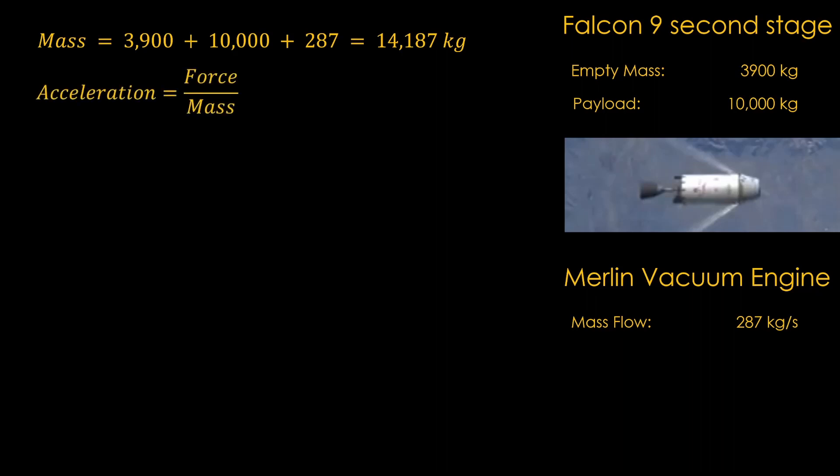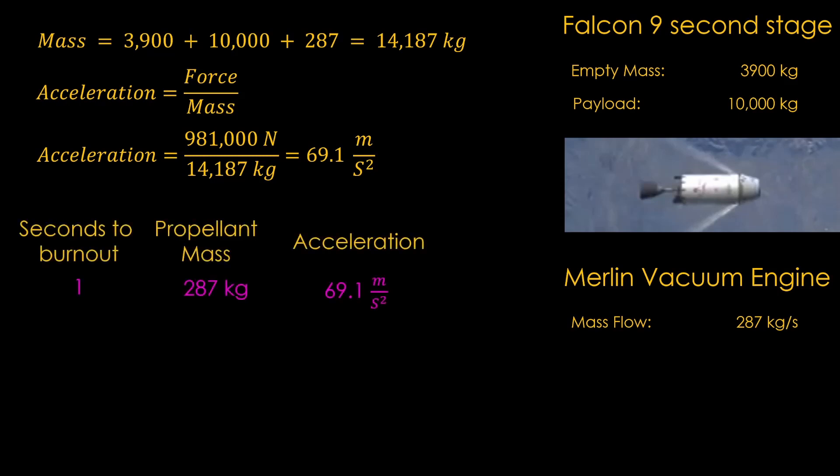Now that we've talked about thrust, we can move towards the rocket equation. We're going to look at the Merlin 1D vacuum engine in a Falcon 9 second stage, which has an empty mass of 3,900 kilograms. We'll assume a payload of 10,000 kilograms, and we just figured out that the mass flow rate for the engine is 287 kilograms per second. If we put one second worth of fuel in this stage, that gives us a total mass of 14,187 kilograms. We know that acceleration equals force divided by mass, so we take the force in newtons and divide by the total mass, and we get 69.1 meters per second squared. For the last second of the burn, that's how much acceleration we will get.